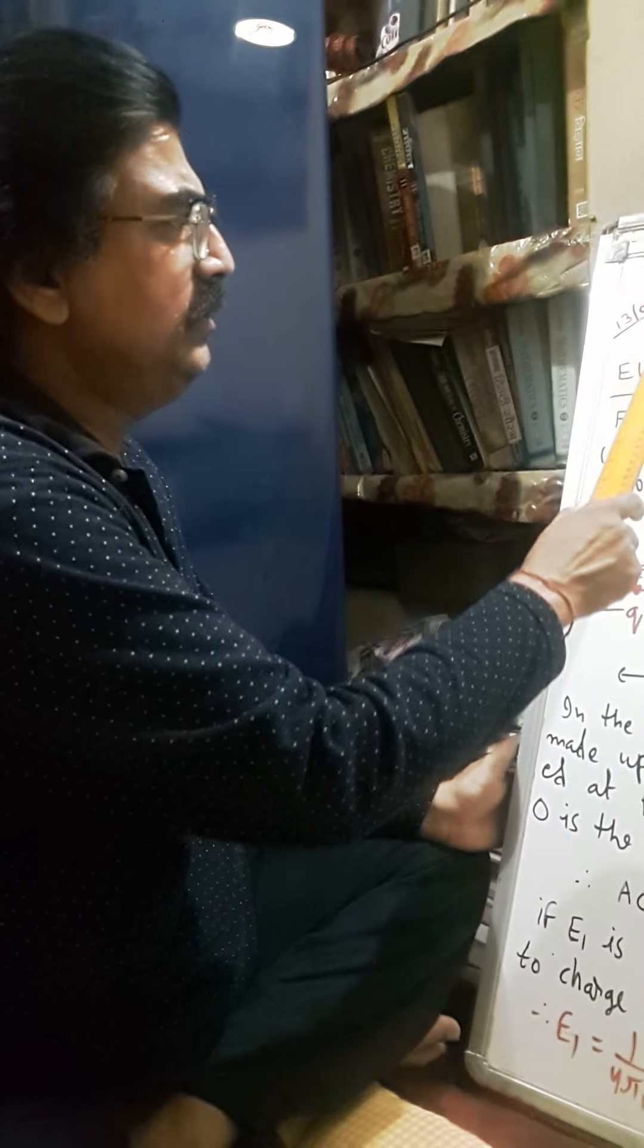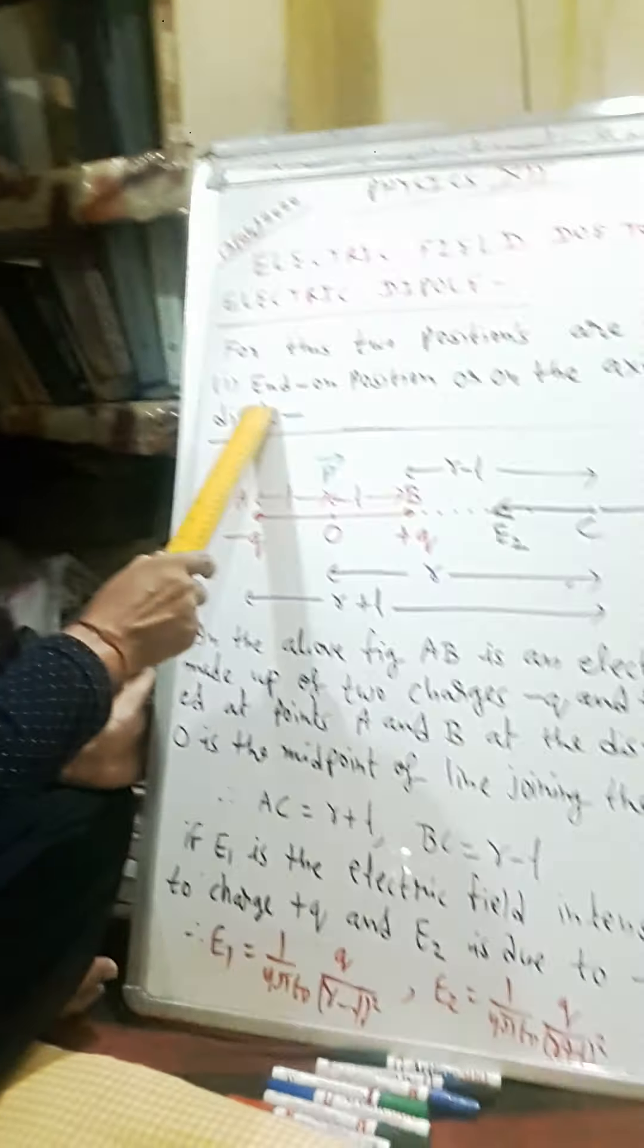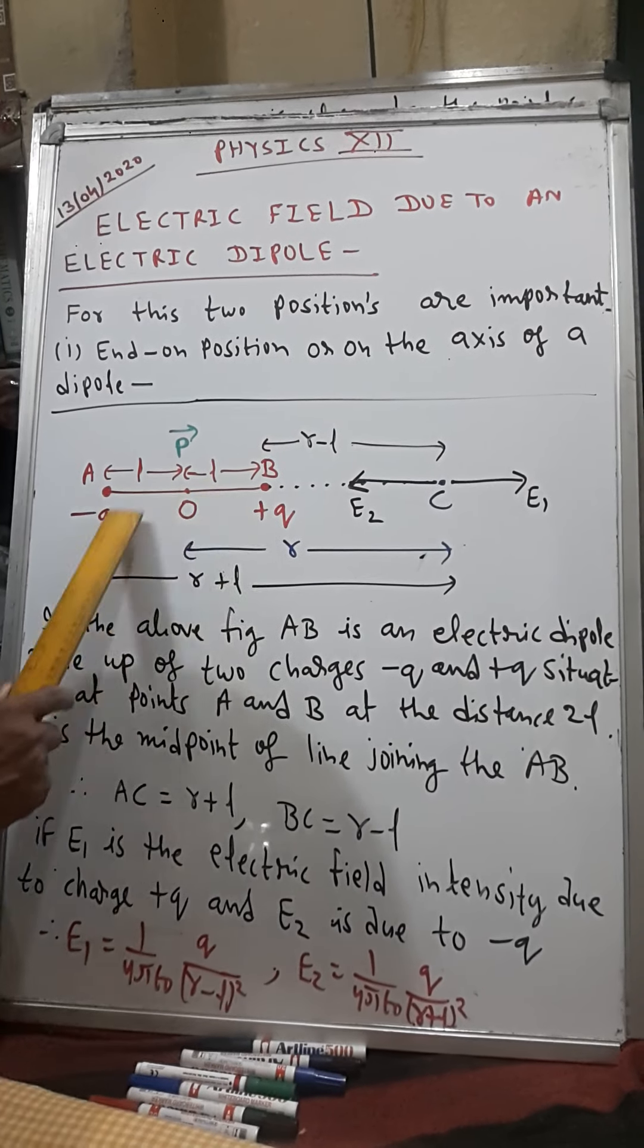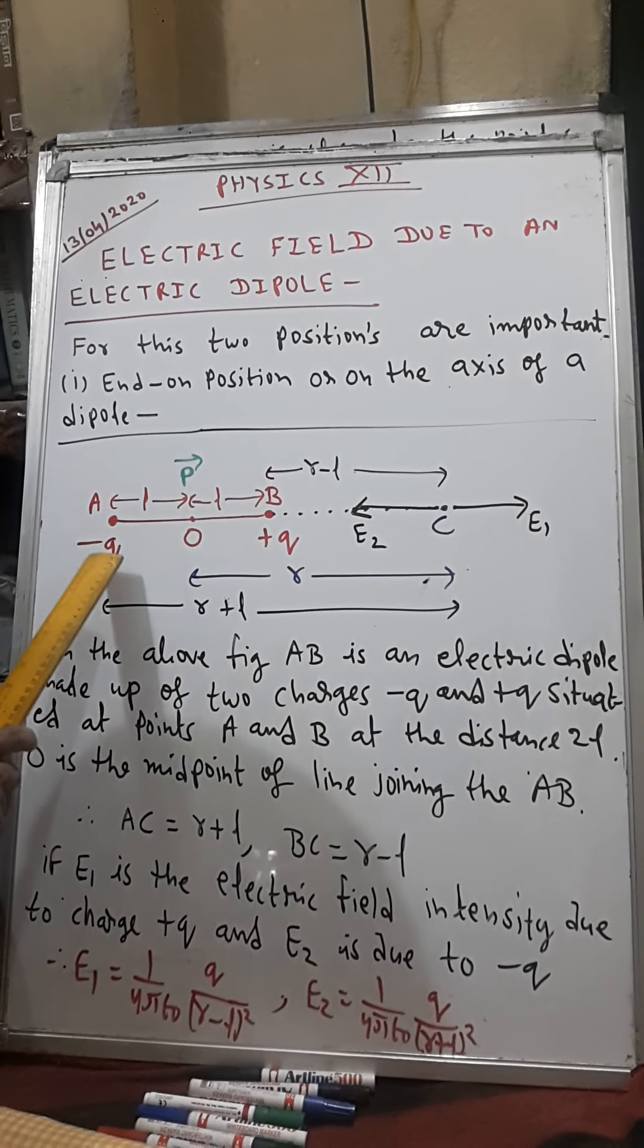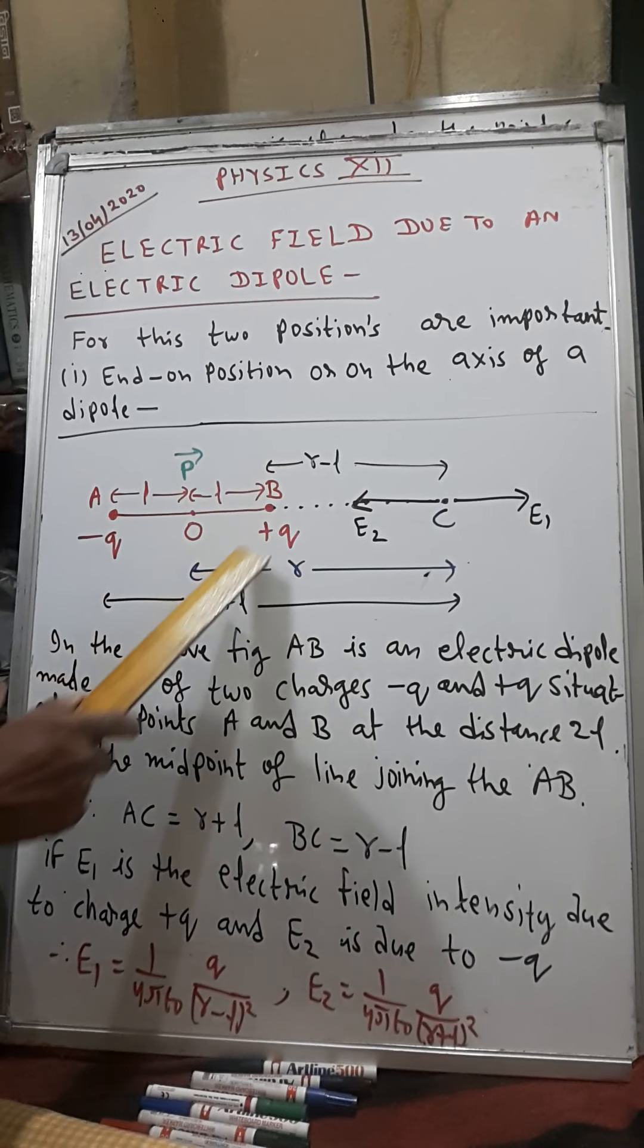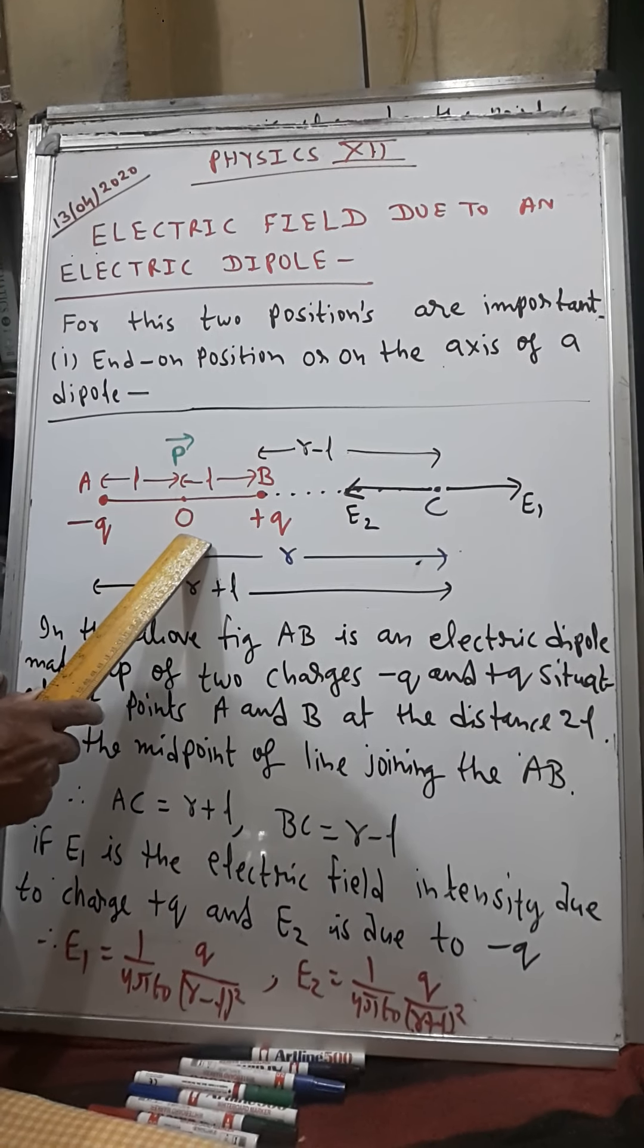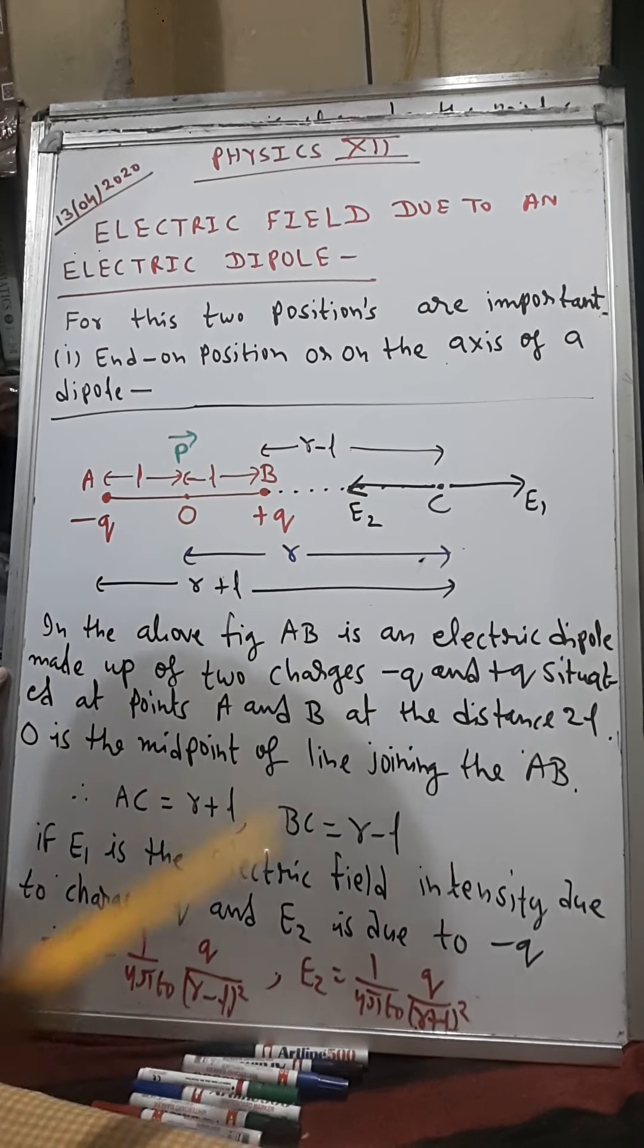So students of class 12, the topic is electric field due to an electric dipole. The first case is end-on position or on the axis of a dipole. This is an electric dipole AB made up of two charges, minus q and plus q. Minus q is situated at point A, plus q is situated at point B. The distance between these two charges is 2L. O is the midpoint, the madhya bindu of this.